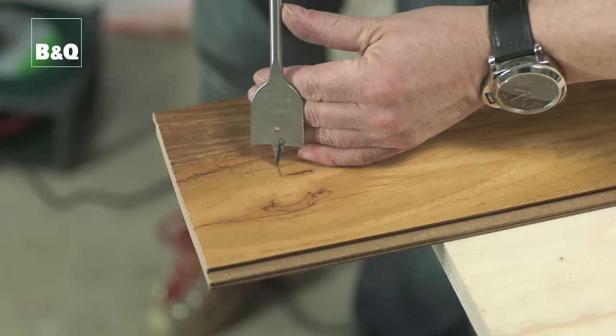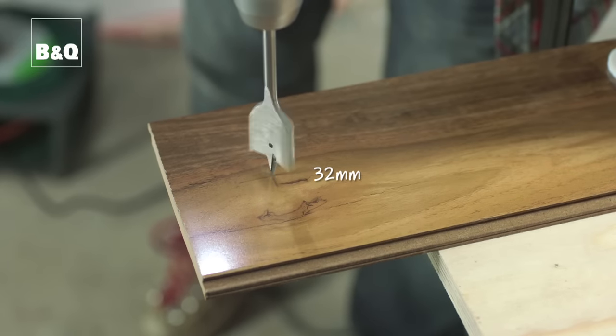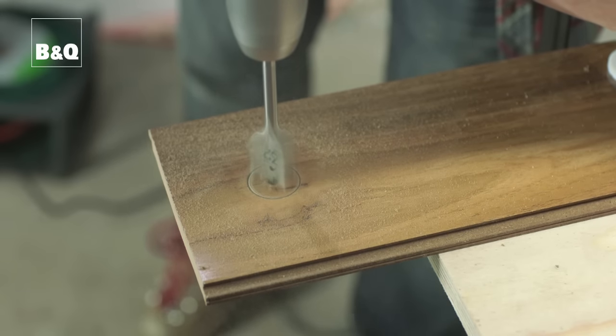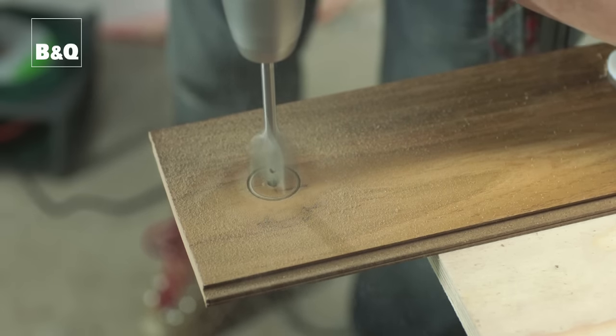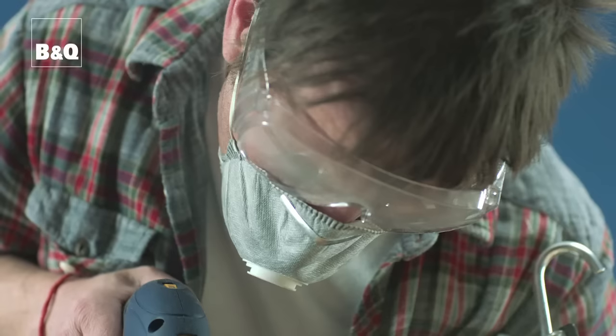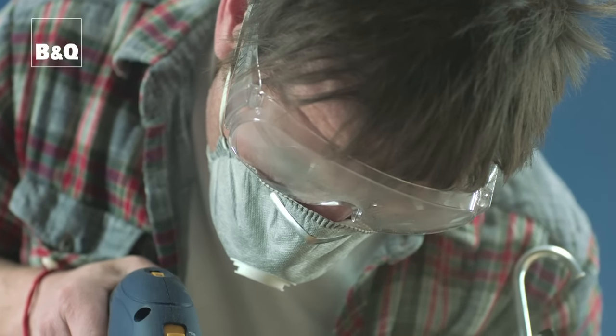Use a power drill with a 32mm spade bit. This will give you a big enough hole to allow for expansion as a standard radiator pipe is 15mm. Again, do this in another room or outside and don't forget the dust mask and goggles.